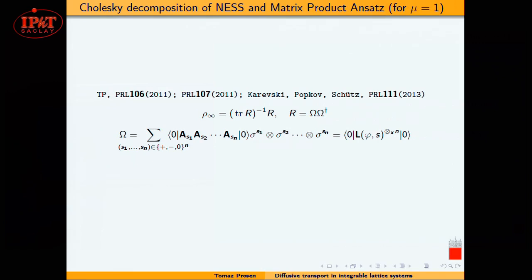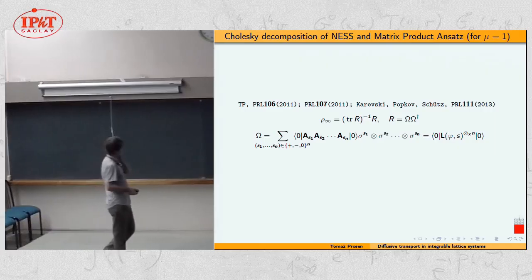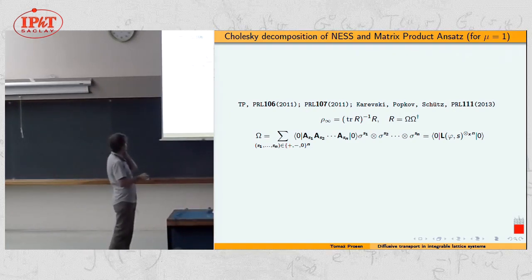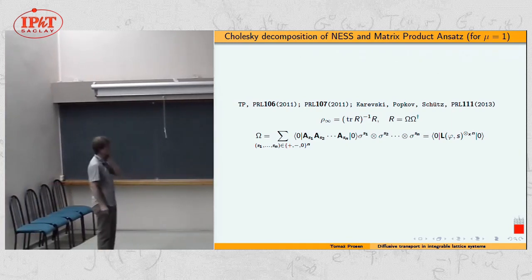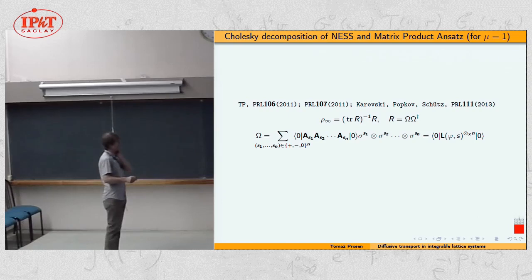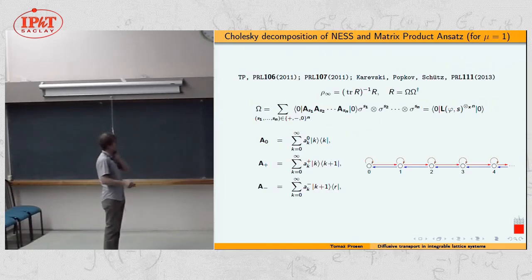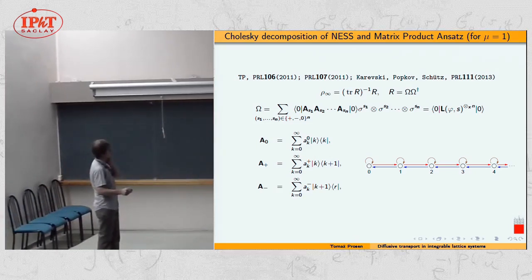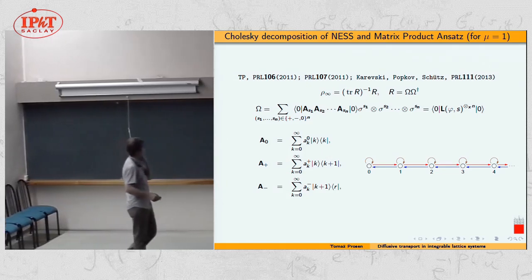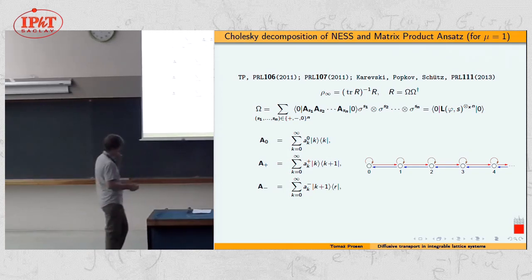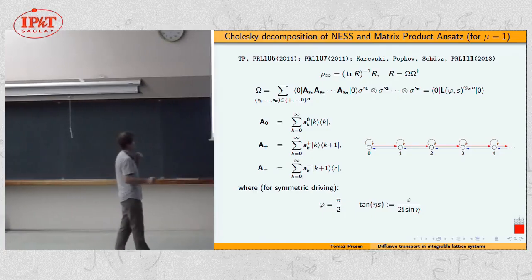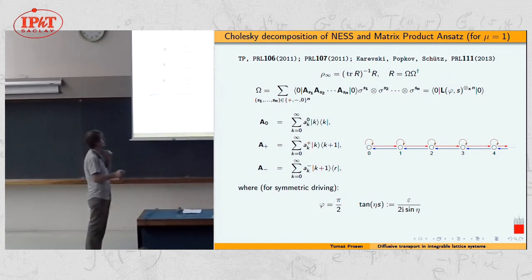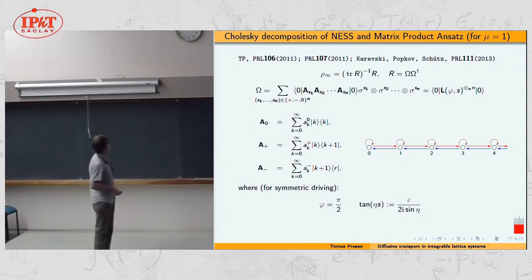The idea is to solve the steady-state Lindblad equation and determine the full density matrix of the steady state. There are four jump operators: spin raising and lowering on the left and right, with epsilon as the overall coupling strength and mu as the bias or imbalance between left and right. For mu equal to 1 — the farthest-from-equilibrium driving, fully polarizing spin up on the left and spin down on the right — you can write the exact density operator in the steady state in matrix product form.